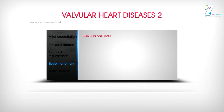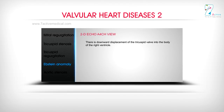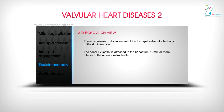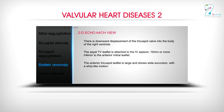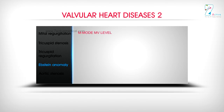Ebstein Anomaly — 2D Echo A4CH View: There is downward displacement of the tricuspid valve into the body of the right ventricle. The septal TV leaflet is attached to the IV septum 10 mm or more inferior to the anterior mitral leaflet. The anterior tricuspid leaflet is large and shows wide excursion with a whip-like motion. The right ventricle is small because its upper portion lies above the downward displaced tricuspid valve.